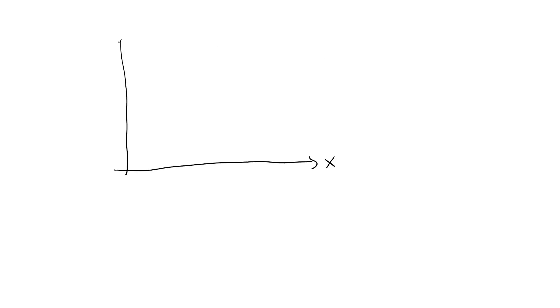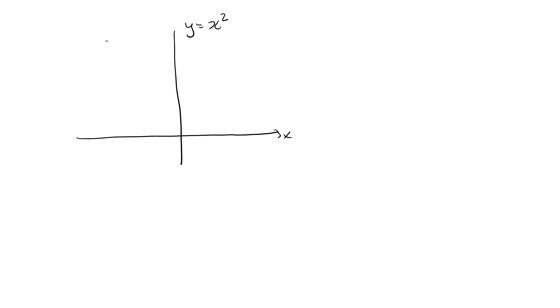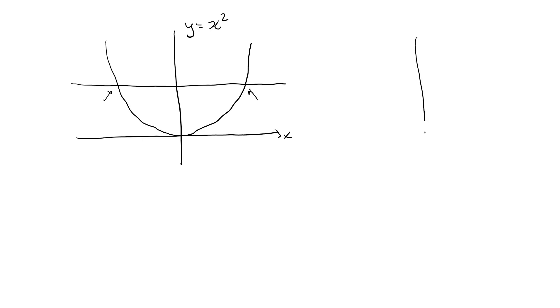If we make a plot of an explicit relationship, where y is determined by x, we get a graph that satisfies the vertical line test — any vertical line may intersect the graph at most one time. The graph may or may not satisfy the horizontal line test. For example, y equal to x squared will not; it intersects the horizontal line twice. While y equal to e to the x will satisfy it.